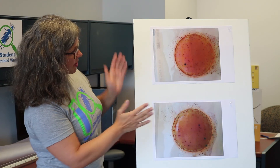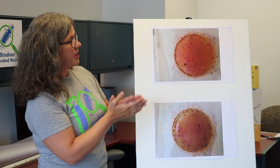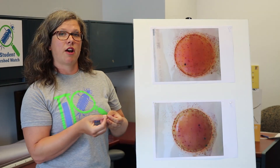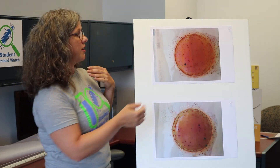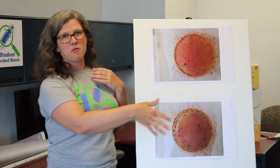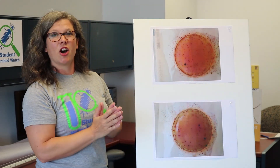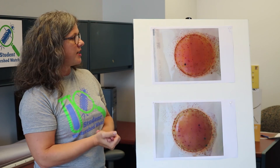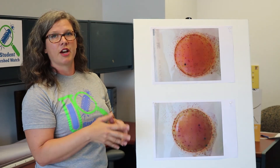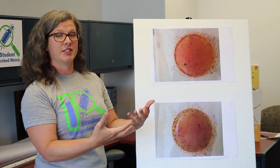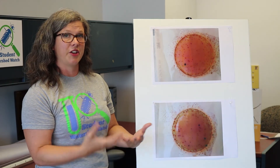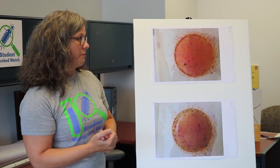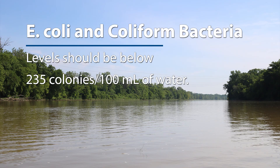Another option, which we don't have on either of these, is 'too numerous to count.' If your entire plate is covered with tiny colonies, there's not a great way to estimate. If you put 'too numerous to count,' then we know it's a much higher value than you would expect or want in your water. That's it!